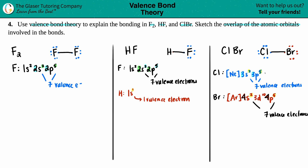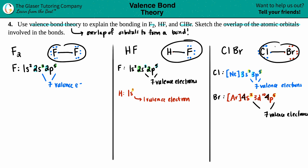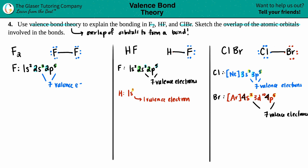Now we're ready to do valence bond theory. Valence bond theory is about the overlap of orbitals to form a bond. Instead of drawing this bond line, I'm going to draw the orbital overlap. It was important to know how many bonds exist between the atoms - in all three cases we're dealing with single bonds only. No double or triple bonds, so we just have to sketch the overlap of atomic orbitals for each single bond.